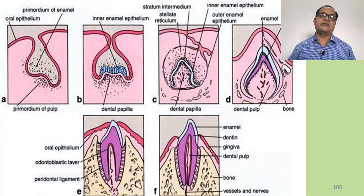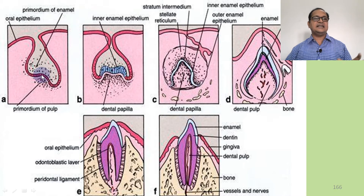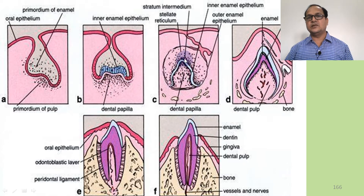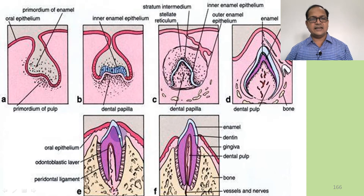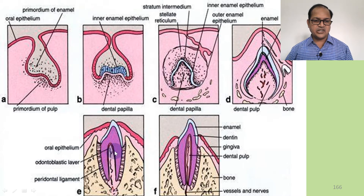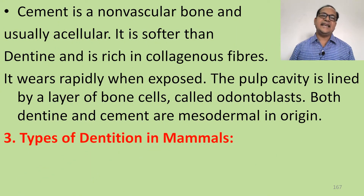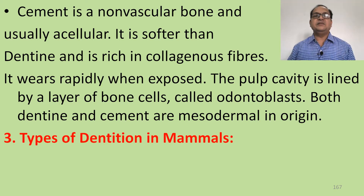The various stages of tooth development in the gum begin with primordial cells forming the dental papilla, which grows outward. In the developing stage, the dental pulp forms and enamel develops as a cap of dentine. Dentine, enamel, pulp cavity, and odontoblastic cells — which secrete dentine — along with blood vessels and nerve supply, are present in the pulp. Cement is a non-vascular, usually acellular bone substance, softer than dentine and rich in collagenous fibers, wearing rapidly when exposed. The pulp cavity is lined by odontoblasts; both dentine and cement are mesodermal in origin.